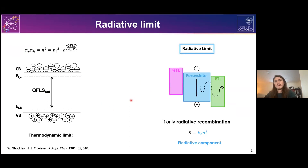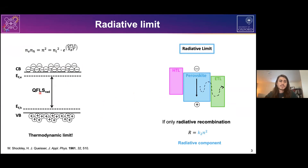In an ideal case where the only recombination process is radiative recombination of electrons and holes through the bandgap with emission of photons, this represents the radiative limit — an ideal scenario. The magnitude of the quasi-Fermi level splitting in this scenario is what we call the thermodynamic limit: the maximum splitting of the quasi-Fermi level, which we cannot overcome.